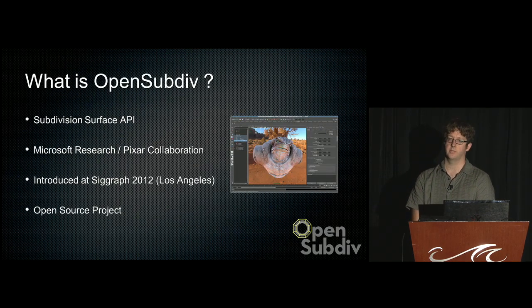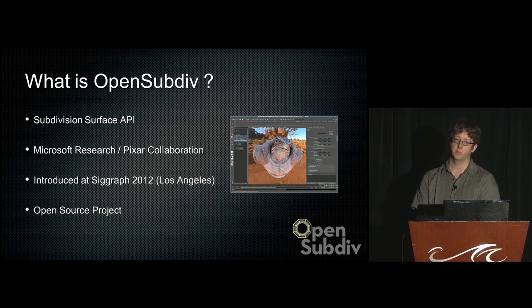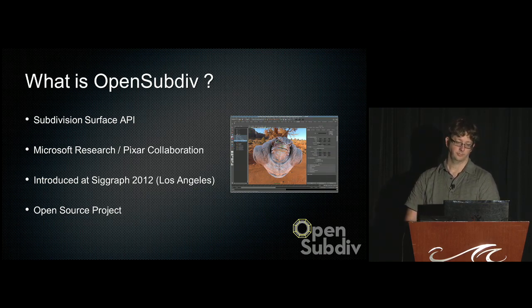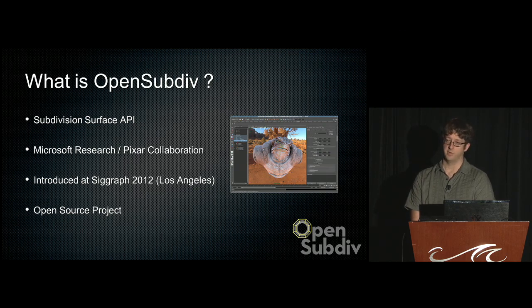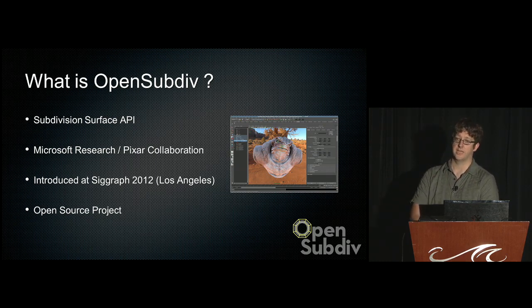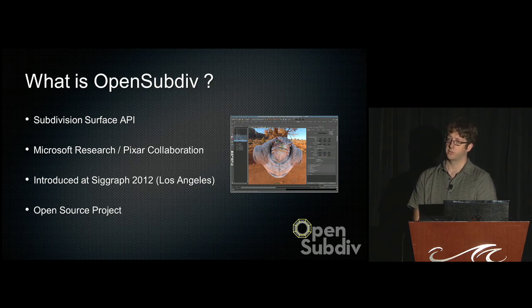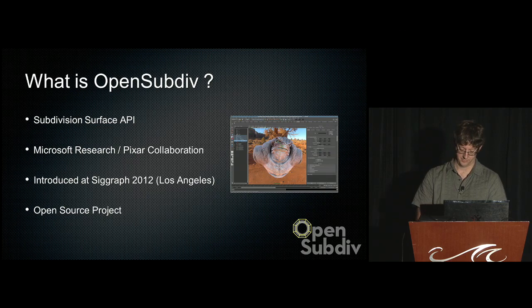OpenSubdiv is a library that client 3D applications can use to manipulate and draw subdivision surfaces. This is a result of a collaboration between Microsoft Research and Pixar R&D — specifically Charles Loop and Matthias Nessner of Microsoft, and Tony DeRose and Mark Meyer of Pixar. We introduced this at SIGGRAPH 2012 in Los Angeles. This is Pixar's first open-source project; all the code is available on GitHub. The patents governing subdivision surfaces that we use at Pixar are also released as part of OpenSubdiv.